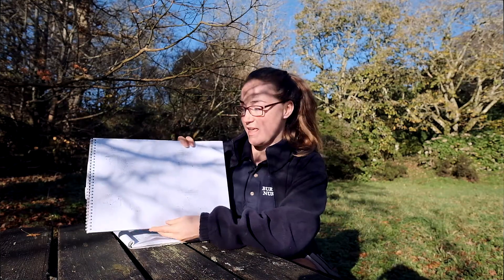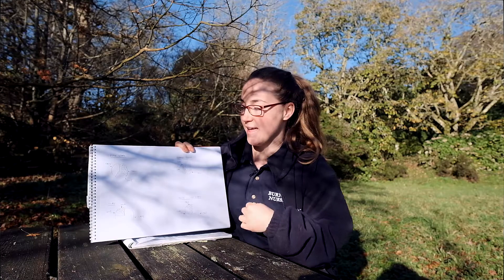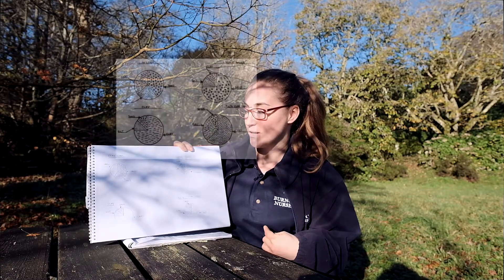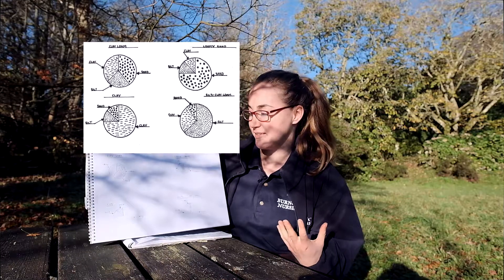You can have a hundred percent clay soil, though this is quite rare. Usually they're a mixture of the three elements. Here on this diagram you can see a clay loam, which is a third each of clay, sand, and silt.